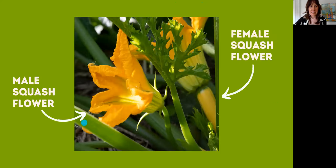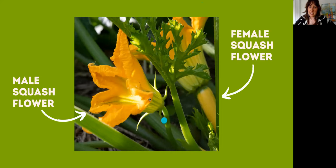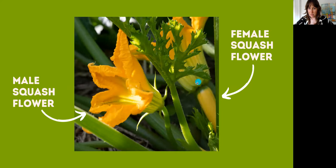I like to use the example of the squash flower when teaching about pollination, because it's a really great visual and it helps us understand the importance of pollination and the basics of it. This is a squash flower — it appears to be a yellow summer squash. This one is a male squash flower. I know it's a male because if you look at the base, it doesn't have a fruit.